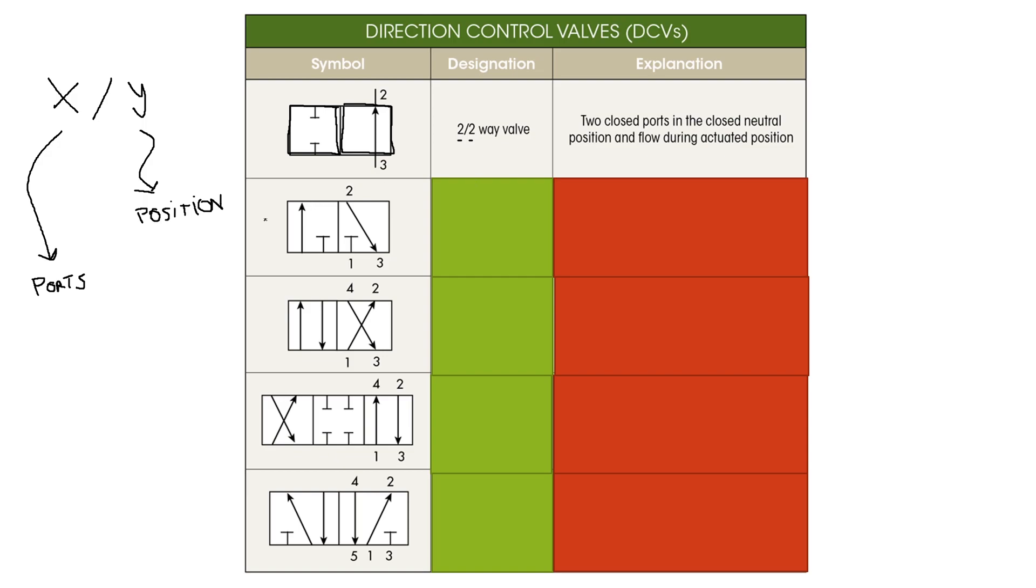The second DCV we have here is a little bit more complicated. As you can see it has three ports: port number one, port number two, and port number three. In the first position flow takes place to the cylinder, so it flows to the cylinder.